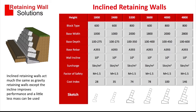The second type is an inclined retaining wall. It works on the same principles as a gravity wall, but because it's inclined, leaning into the earth, we need fewer blocks because gravity is helping us. This is the table of how to build inclined retaining walls.